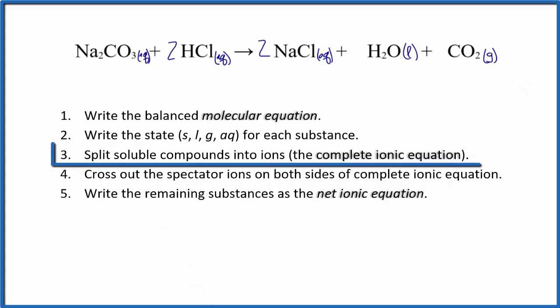Now we can split the soluble compounds into their ions. On the periodic table, sodium is in group 1, it has a 1+ charge. CO3 is the carbonate ion, a polyatomic ion with a 2- charge. Hydrogen is in group 1, so it has a 1+ charge. Chlorine is 1-. On the product side, sodium is positive, chlorine is negative. H2O and CO2 don't dissociate, they don't break apart, so we don't worry about those.